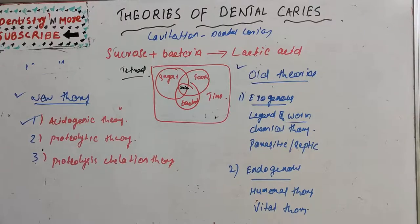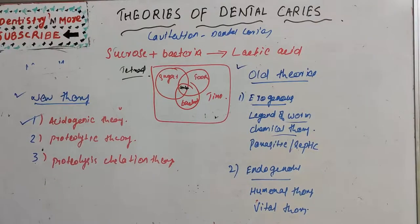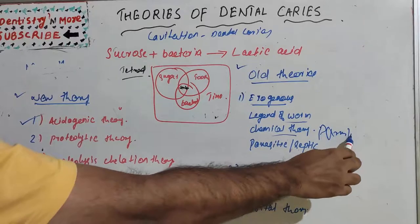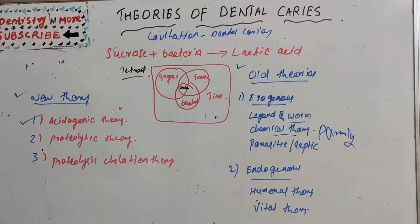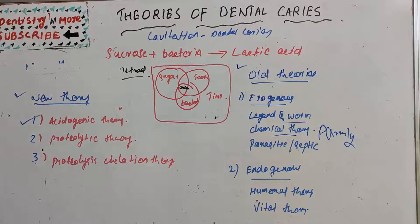The second theory is the chemical theory, put forward in 1890 by Parmly. It highlighted the chemical aspect of caries but he was not able to explain it in detail. He said that there was an unidentified chemical agent responsible for caries. He stated that caries began on the enamel surface where food became putrefied, then acquired sufficient dissolving power to produce disease chemically, but he still could not explain the actual concept.